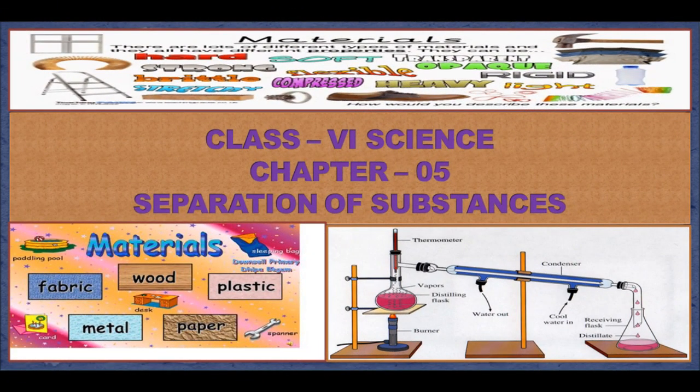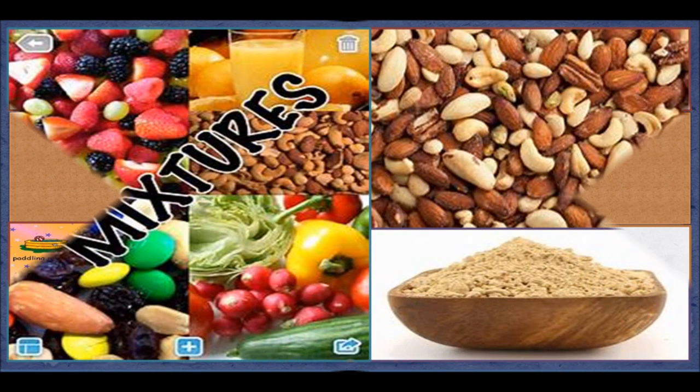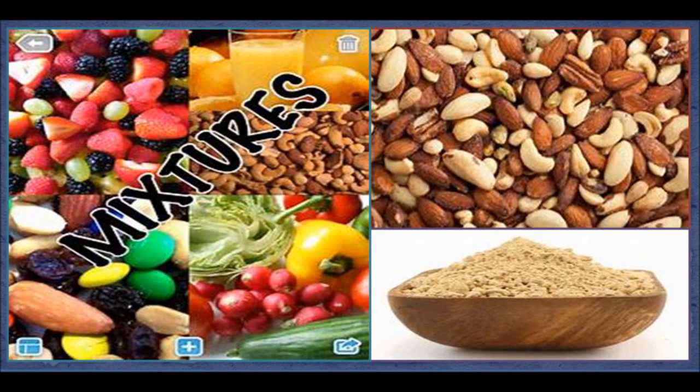Chapter 5: Separation of Substances. Several substances around us exist as a mixture of two or more substances. If we have a mixture of whole peanuts and cashews, we can separate them easily.